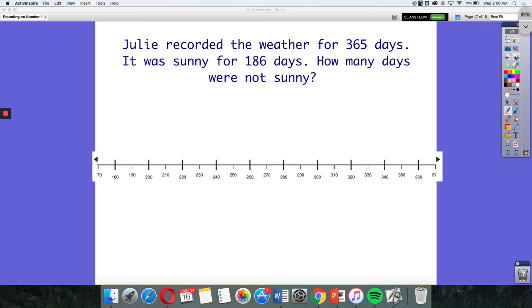Problem says Julie recorded the weather for 365 days. It was sunny for 186 days. How many days were not sunny? So I know that she recorded the weather for 365 days and of those 365 days, 186 were sunny, but I need to find how many days were not sunny.